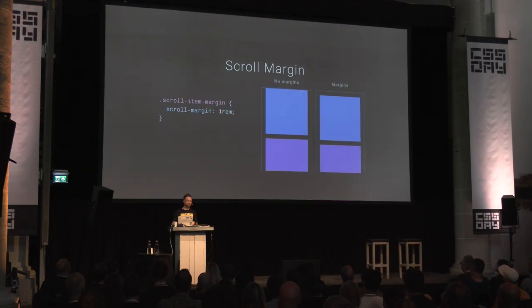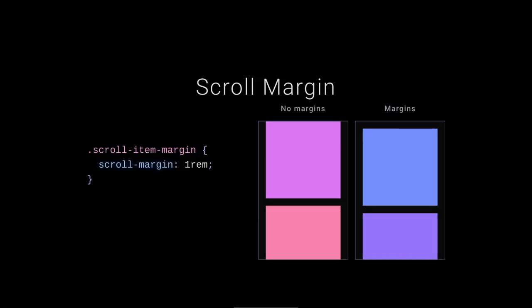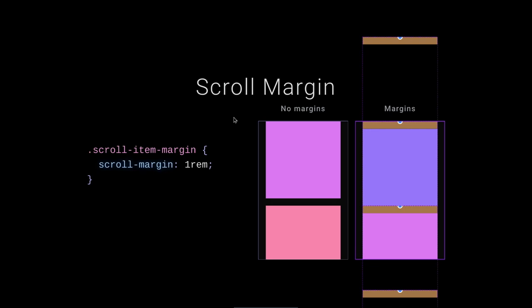Scroll-margin is a lesser-known feature that only works on scroll items — the children. Per item, you can say how far away from the scroll port it should be when snapped. You get a similar effect to scroll-padding but applied per child. DevTools show the same margin color you're used to, with each item showing its distance from the edge. I used scroll-margin-block-start here, so it applies in the block direction at the start.